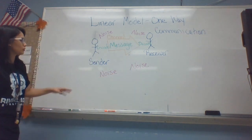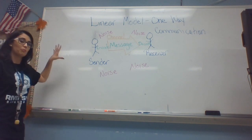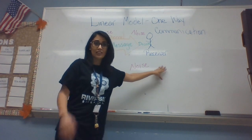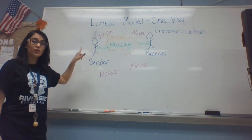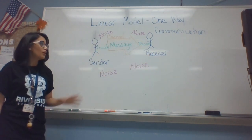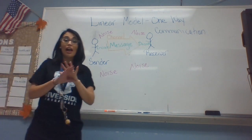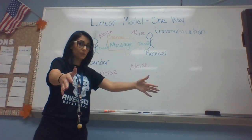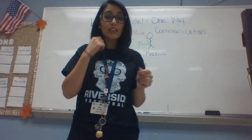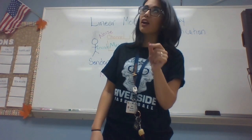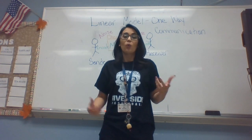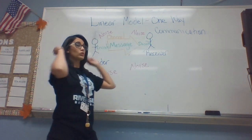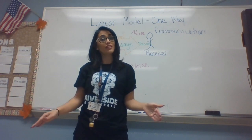You'll notice here that the message goes from the sender to the receiver and that's it. In the linear model of communication, there is never, ever, ever any message that comes back — it goes one way. I want you to take 30 seconds and see if you can think of a real-world example where communication starts with a sender, goes out to the audience, and then stops.